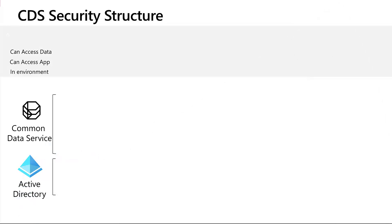I'm going to use this one slide to drive all the demos. We'll be going back and forth with this. We're going to talk about a change to Active Directory, a corresponding change in the Common Data Service, and how that affects some users' access to the system.